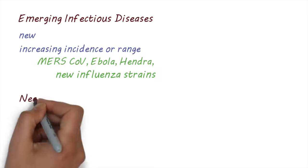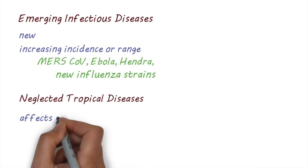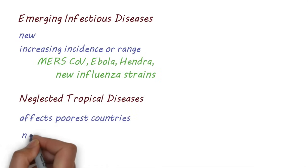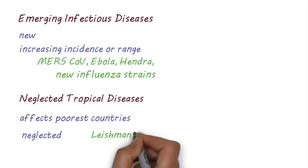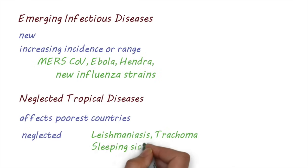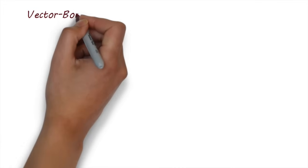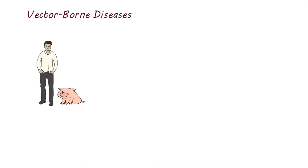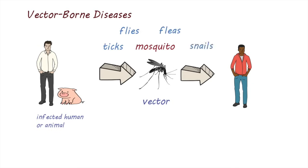Neglected tropical diseases are a group of tropical diseases that affect the poorest countries of the world. Traditionally they have not received much global attention but continue to cause illness in the most vulnerable groups of people. They include diseases like leishmaniasis, trachoma, sleeping sickness, and schistosomiasis. Vector-borne diseases are diseases transmitted from an infected animal or human to another person through the bite of a vector. The most common vector is the mosquito, but others include ticks, flies, fleas, or snails.